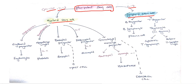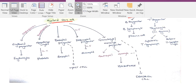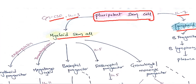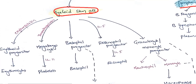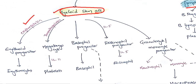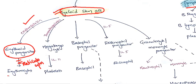All these cells come under myeloid lineage or lymphoid lineage. From myeloid stem cell, erythropoietin stimulates it to give erythroid progenitor, and through a series of steps like reticulocytes and many other steps, we will get erythrocytes, which are also called red blood cells.